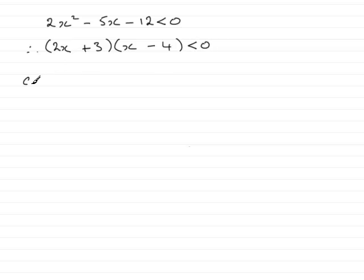What we need to do is find the critical values. So, let's write down the critical values. Remember, this is where this quadratic equals 0, not less than 0. So, that's when 2x plus 3 equals 0, or x minus 4 equals 0.